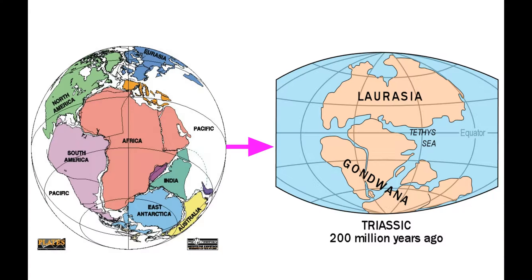The theory of plate tectonics states that the Earth's crust is divided into several large rigid plates made up of continents and ocean bases. These crustal plates move over time relative to one another — they can move apart, slide past one another, or collide. Continental drift theory is an important part of plate tectonics. It is now believed that the Earth's continents have not always been in their present positions. The continents were once part of an ancient supercontinent known as Pangaea, which over time rifted and drifted apart, forming two supercontinents known as Gondwana and Laurasia.